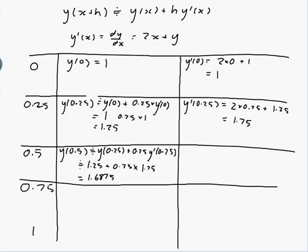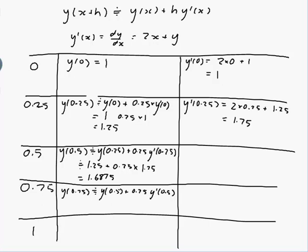So now I want y of 0.75, and that's approximately equal to y of the previous step, plus h, which is 0.25, times y dashed of the previous step, which was 0.5, and y of 0.5 was 1.6875, and y dashed of 0.5, I haven't figured that out yet. So y dashed of 0.5 will be 2 times x, and x is 0.5, plus y, and y of 0.5 is 1.6875, which comes out to 2.6875. So 2.6875, and that's approximately equal to 2.3594.